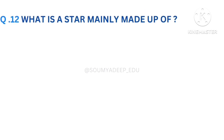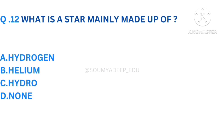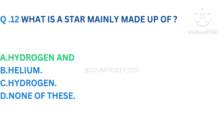What is a star mainly made up of? The options are hydrogen and helium, helium, hydrogen, none of this. Your time starts now. The answer is hydrogen and helium. Let's move to the next question.